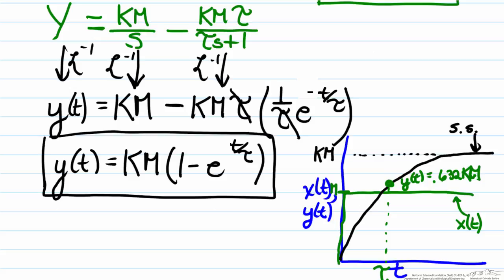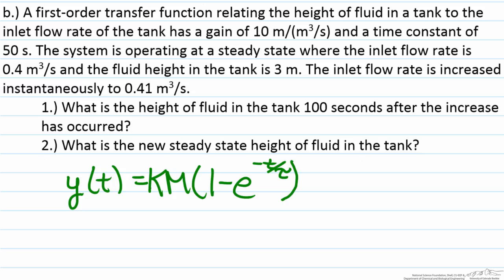So with this information that we have obtained we can now begin to solve part b, which gives us information about a first order transfer function relating the height of fluid in the tank to the inlet flow rate, so therefore our input variable here would be the inlet flow rate which we will call qi, and the output variable will be the height of fluid inside the tank h.